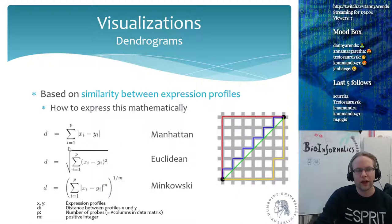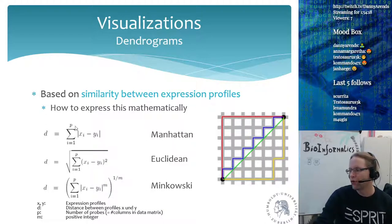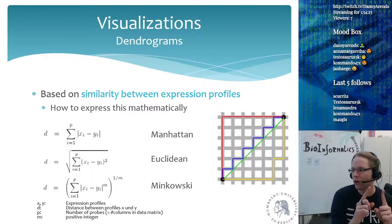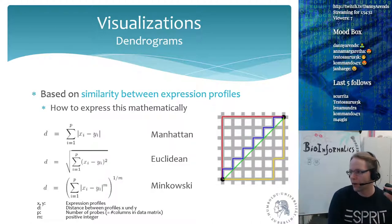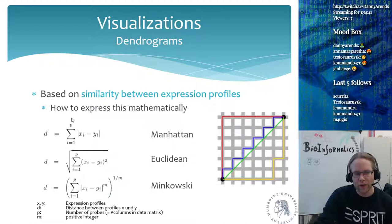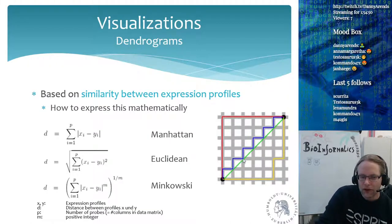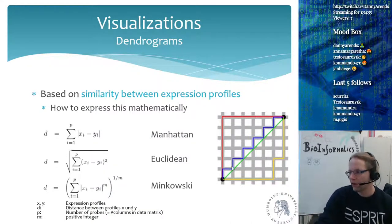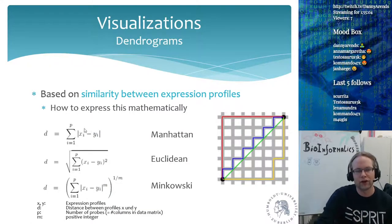The most basic distance measurement is the Manhattan distance, where you go through all your genes — one to p — and look at the expression of a gene in the first sample, subtract the expression in the second sample, take the absolute value, and sum all of these up. So for two samples, you go through each measurement: take the expression of gene one in sample one minus gene one in sample two, take the absolute difference, and sum that up for all genes. You get a stepwise accumulation of differences.